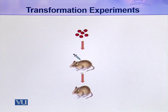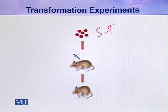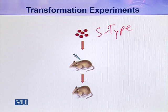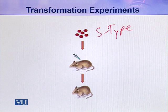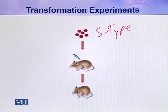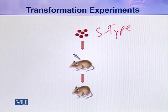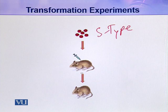In his third experiment, he took S-type bacteria and killed them by heating. He knew that if bacteria are killed by heat, they become non-virulent and lose their ability to cause any disease. So he took these heat-killed S-type bacteria, injected them into mice, and observed that the mice survived.